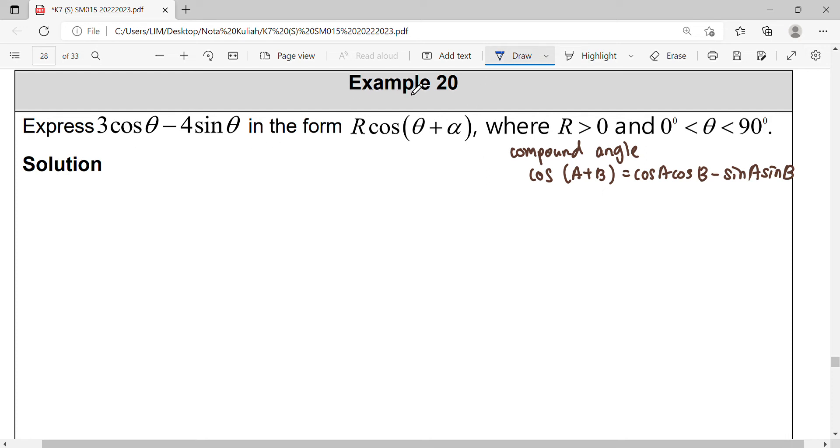For this example, we're going to express this trigonometric expression in the form of a compound angle of cosine. You can notice that this is a single cosθ minus single sinθ, where this pattern of expression cannot be solved.